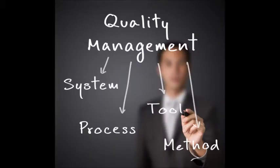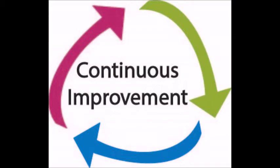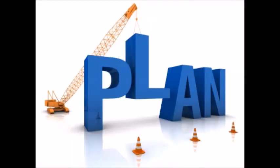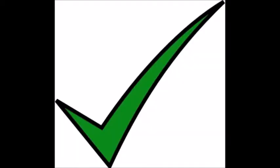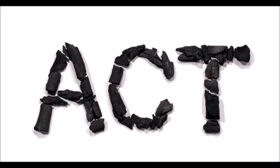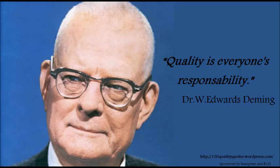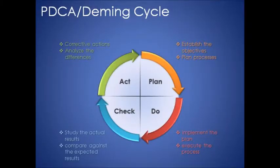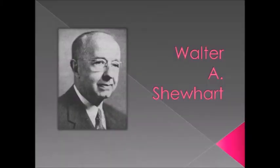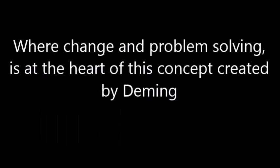You see, in quality management there's a concept under continuous improvement — a cycle called Plan, Do, Check, Act, introduced in the 1950s by W. Edwards Deming, just to keep you on track. Often referred to as the Deming cycle or the Shewhart cycle, where change and problem solving is at the heart of this concept. Just four phases is what it involves, then repeat and repeat until your problems are resolved.